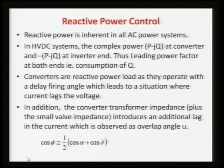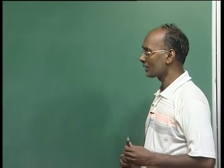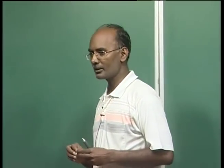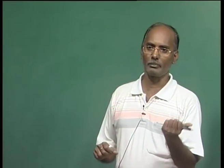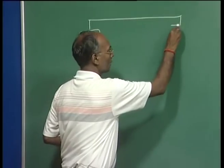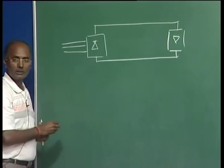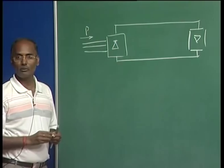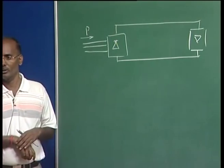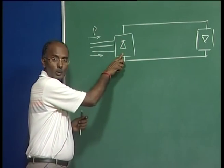Starting with reactive power control: we have already seen that converters and inverters are consuming reactive power. At the converter station, it is just like a leading power factor — in the sense that the flow direction of Q is reverse of P. Here, if this is a rectifier and this is your inverter with three-phase connection, P is flowing in this direction, but Q must be supplied from the system because the converter consumes reactive power from the source.